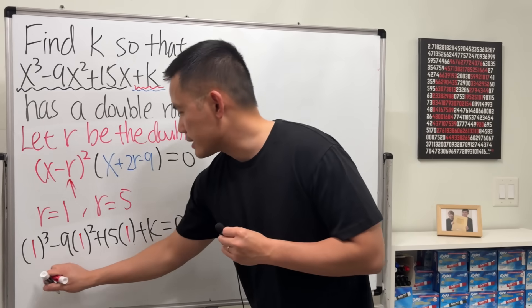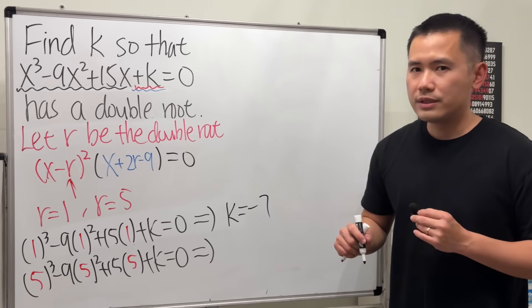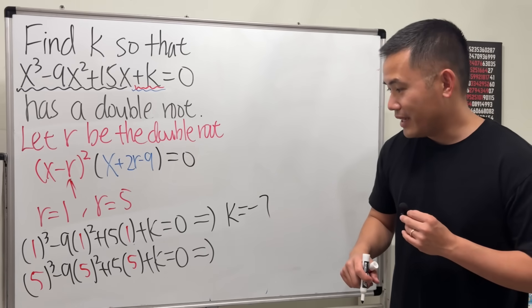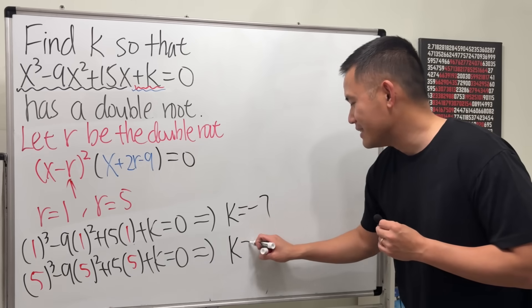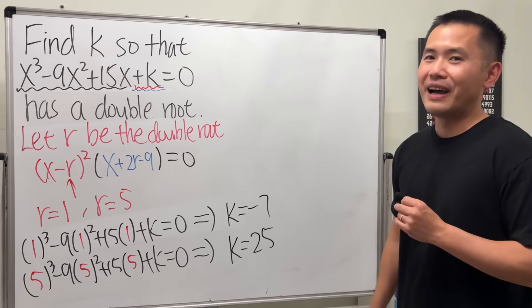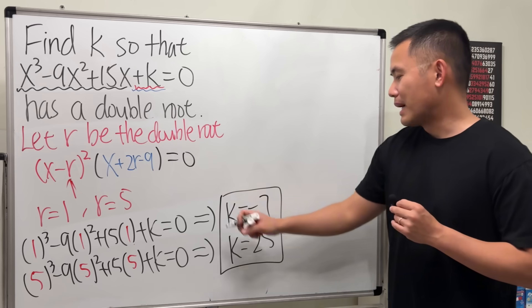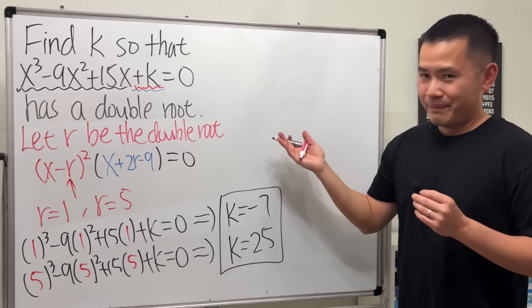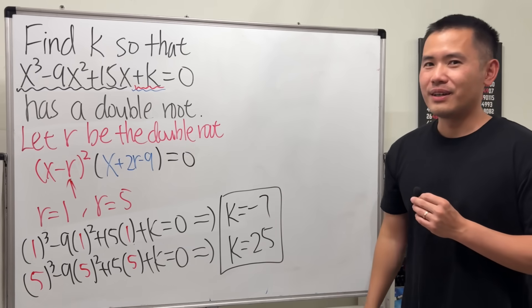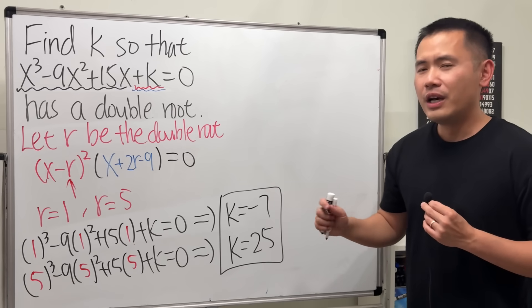Now plugging 5 into all the x's, all this right here is equal to -25, and then plus k = 0, so that means k = positive 25. So to answer the question, we actually have two possible k values to make this work. So what do you guys think? Hopefully you guys like this.